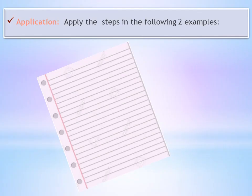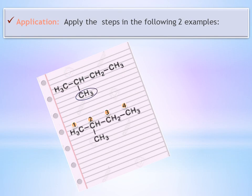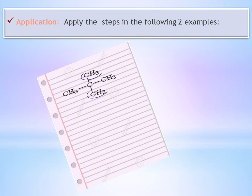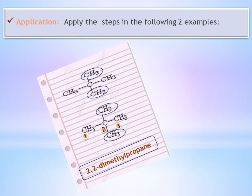Now, let us apply these steps in two examples. Example 1: here we have a branched chain alkane. The branch is a CH3 methyl group. We number from the side nearest to the branch — it is at carbon number 2. Its name is 2-methylbutane. Example 2: here we have two branches, both methyl groups. We number to get the lowest numbers — from both sides the result is the same in this example. It is named 2,2-dimethylpropane.